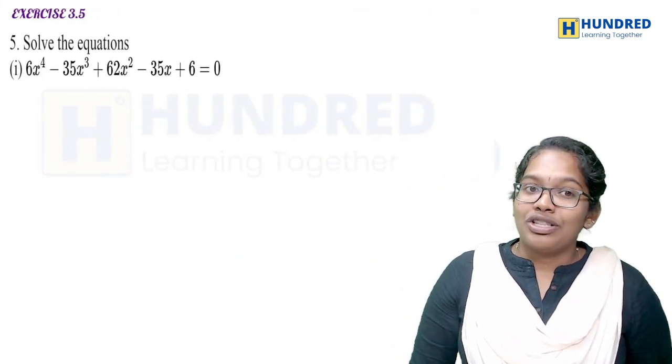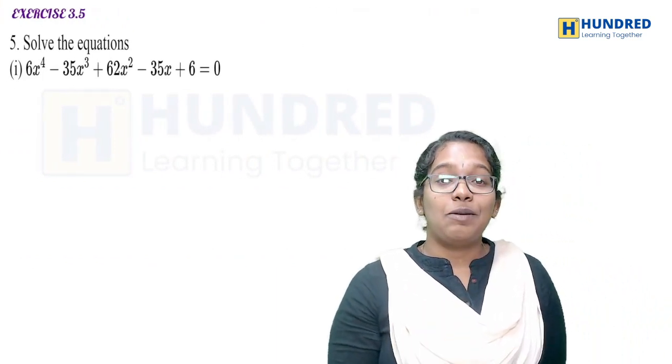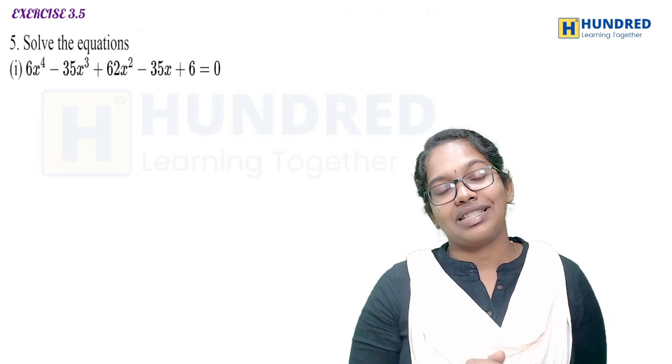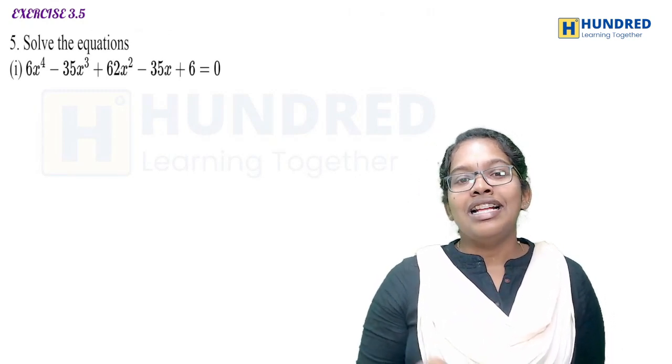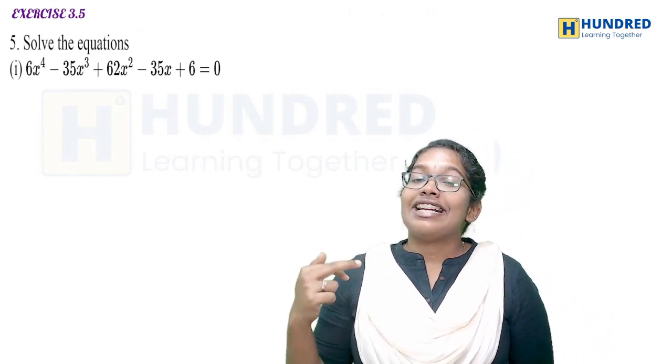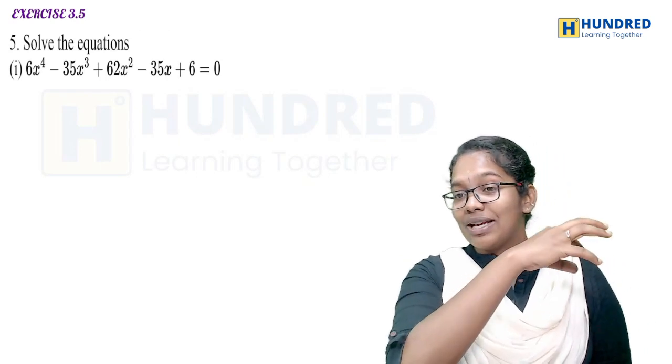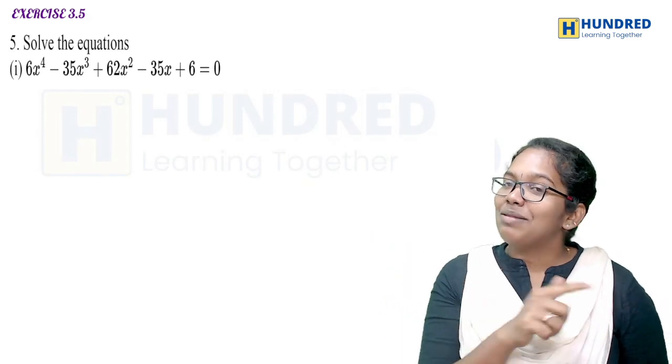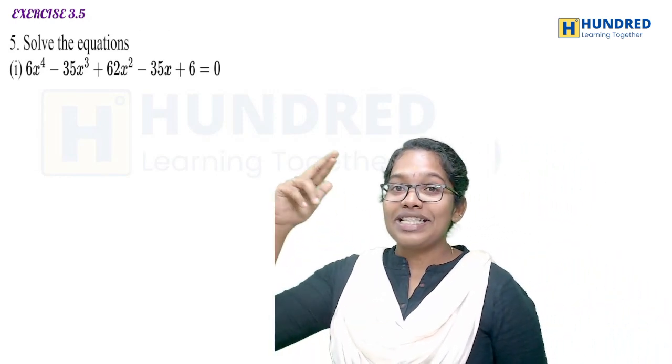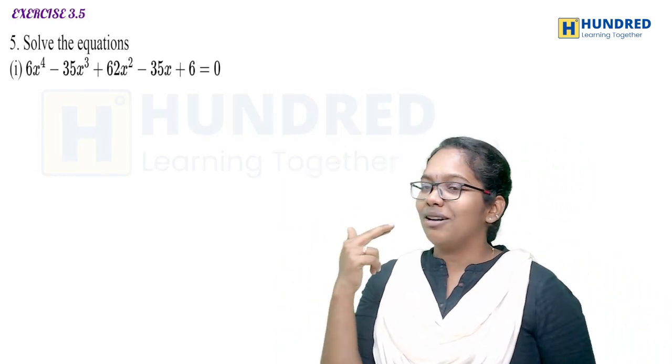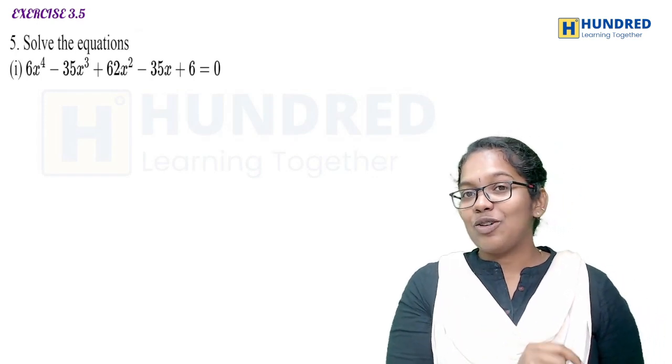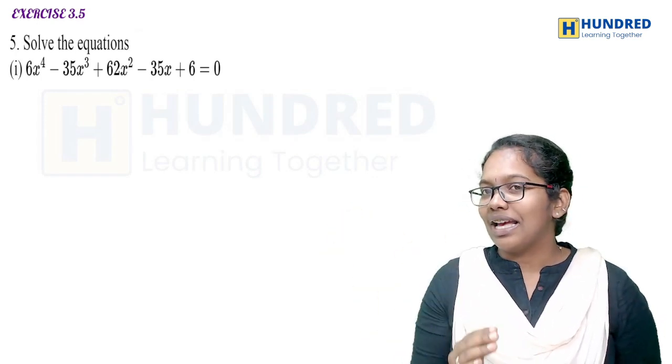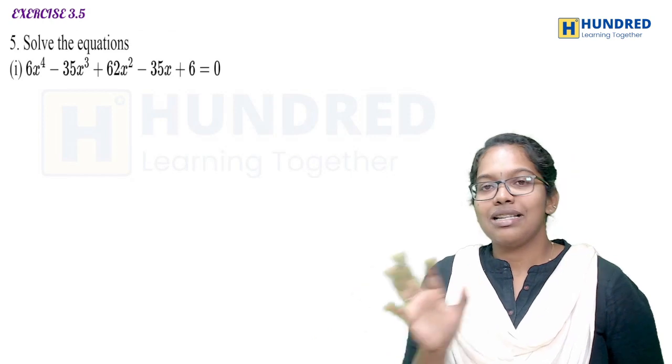Next, we move on to Exercise 3.5, the fifth sum. For this, these are reciprocal equations. If you look at the first set of coefficients, that is the coefficients, and the last set of coefficients are the same. If you look at the question, what topic is it? As I told you, you will have to study books and notes. You will have to study guides. Okay.